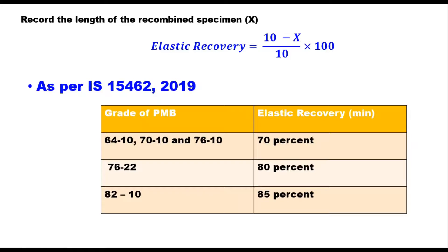As per IS 15462:2019, for grades of polymer modified binders 64-10, 70-10, and 76-10, elastic recovery should be at least 70%. For 76-22, it is 80%, and for 82-10, it is 85%. These are the requirements. As I told you earlier, this test is more suitable to determine the dose of the polymer in the binder to achieve these results.